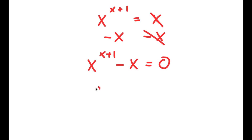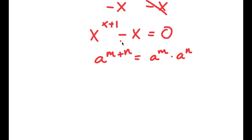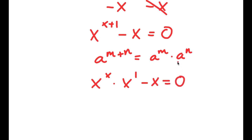Using the property that a to the power of m plus n equals a to the power of m times a to the power of n, I can rewrite x to the power of x plus 1 as x to the power of x times x to the power of 1. So I have x to the power of x times x minus x equals 0.